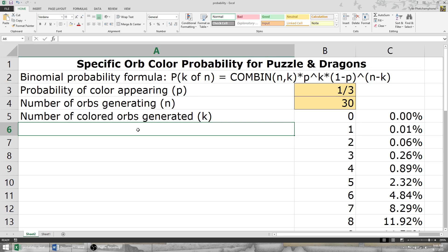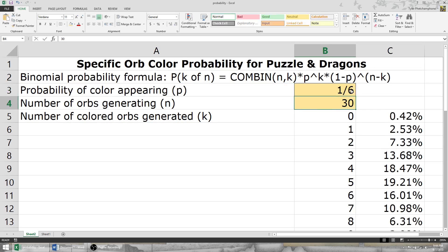How many orbs do we need to eliminate to give us a good chance of generating two more purple orbs? To go from six purple orbs on the board to eight purple orbs on the board. Well, if we're in a normal dungeon, we have a one in six chance of producing a purple orb.